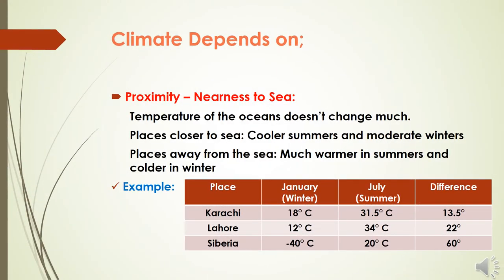Proximity or nearness to the sea greatly affects the temperature of a place. The temperature of the seas does not change very much throughout the year; therefore, places closer to oceans and seas have cooler summers and milder winters. Let us see this table to understand this aspect. In January, that is winter, Karachi, located on the coastline of the Arabian Sea, has 18 degrees Celsius. Lahore has 12 degrees Celsius because it is located away from the sea, and Siberia has an extremely cold temperature of minus 40 degrees Celsius because it is located even farther from the sea. In July, that is summer, Lahore and Siberia show much increased temperatures compared to their winter conditions, as compared to Karachi.